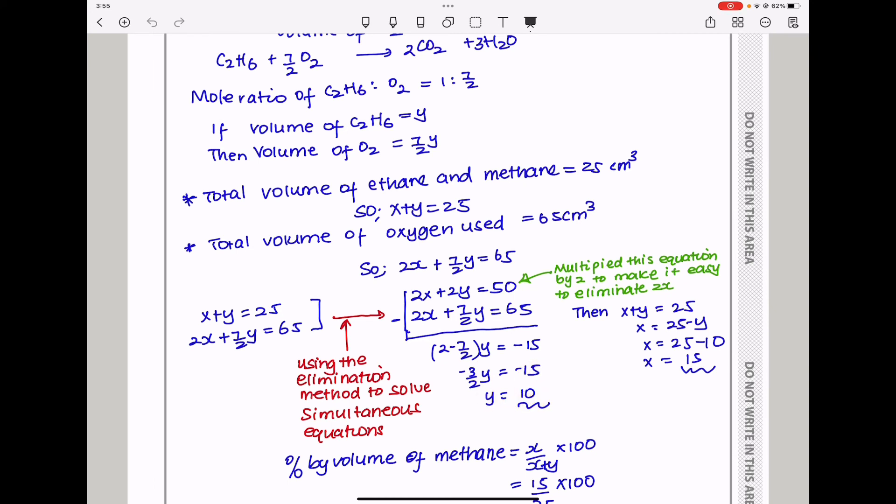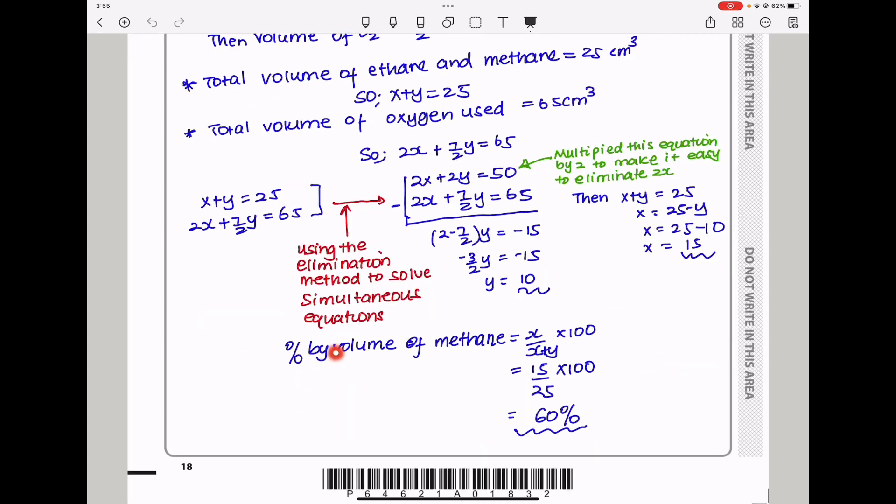If we substitute this 10 back, we can see X = 15. The percentage by volume of methane is volume of methane (15) divided by total volume (25) times 100, which gives us 60%. You need to know basic mathematics skills of solving simultaneous equations to solve this appropriately.